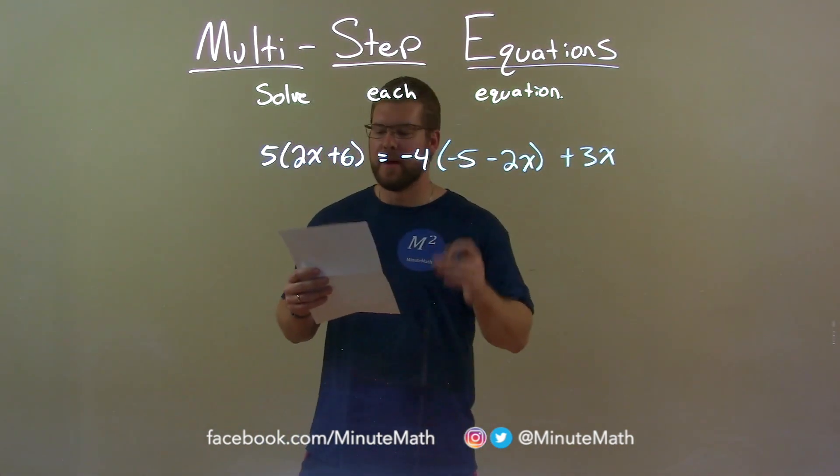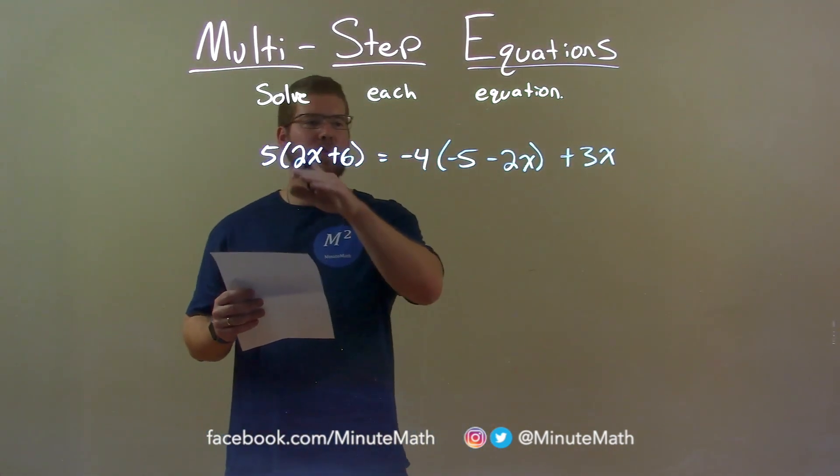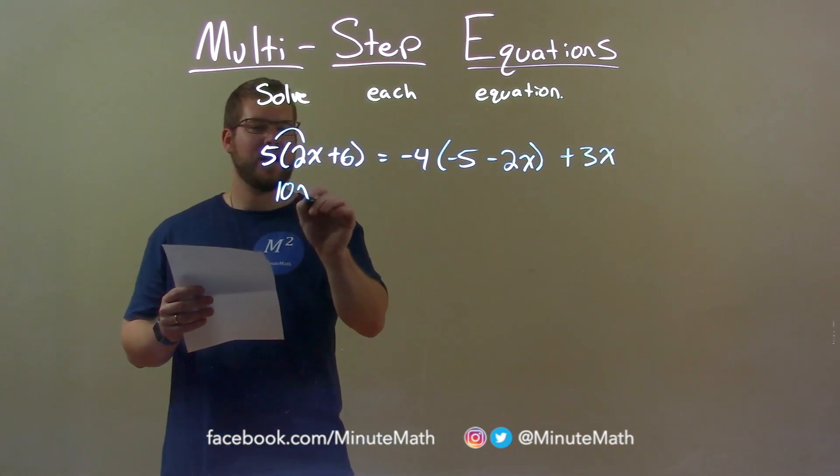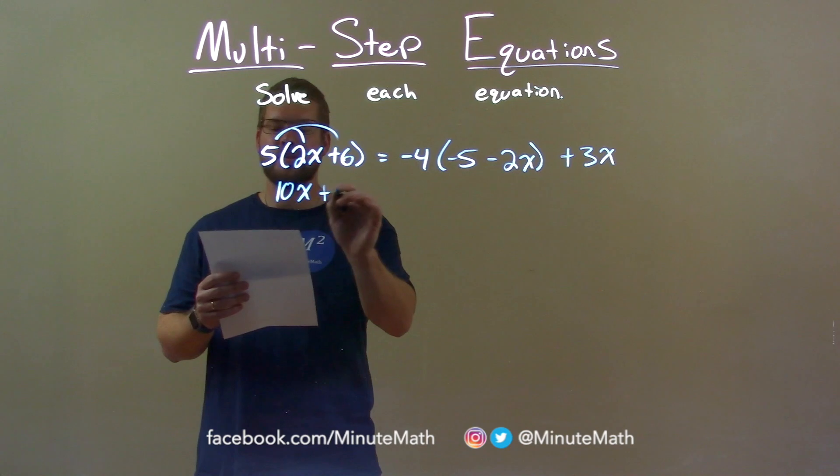My goal is to get x by itself. First step, I'm going to distribute the 5 into the first parentheses. 5 times 2x is 10x and 5 times 6 is 30.